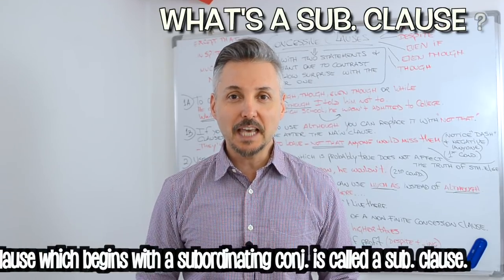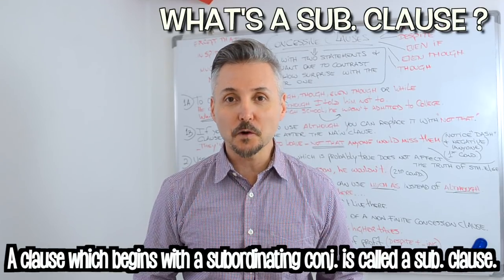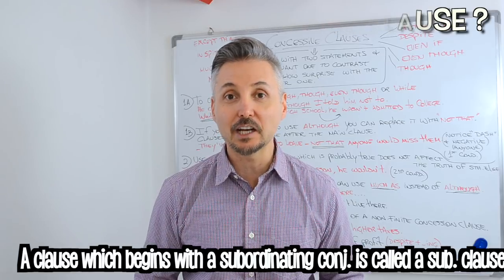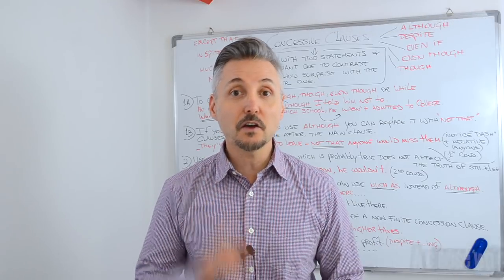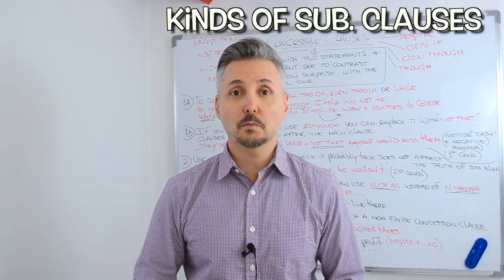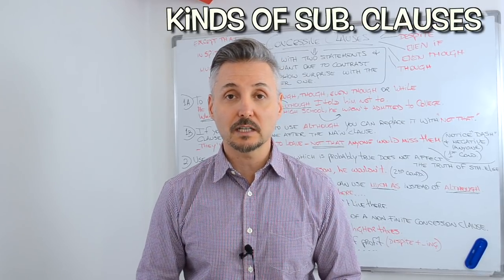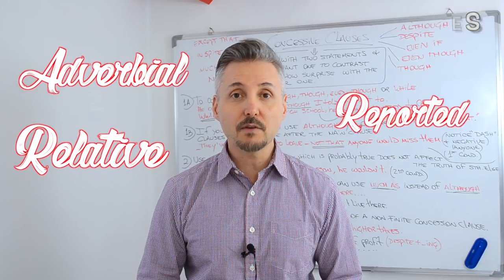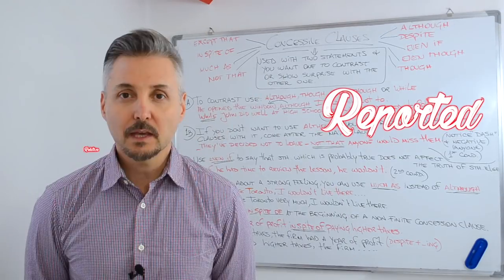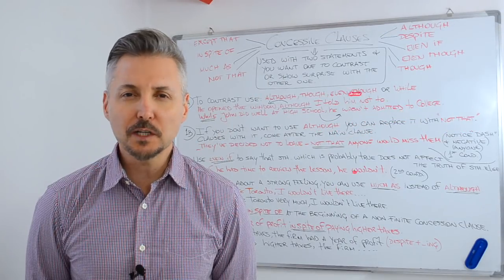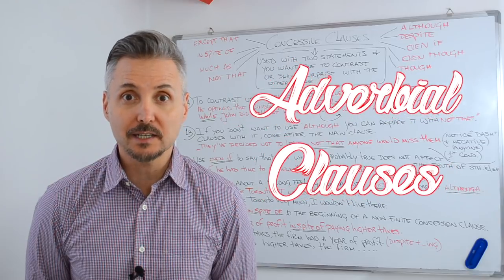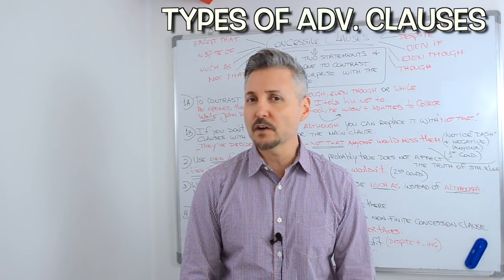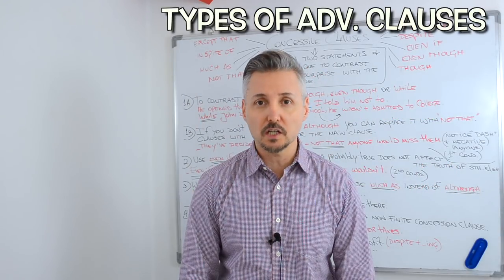A clause which begins with a subordinating conjunction is called a subordinating clause. There are three kinds of subordinating clauses: adverbial, relative, and reported. In this lesson, we're going to take a look at adverbial clauses. There are eight types of adverbial clauses.